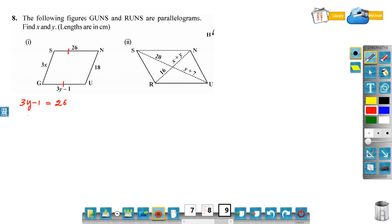We have to solve this. 3y is equal to 26 plus 1, that is 3y equals 27. Y is equal to 27 by 3, that is 9.